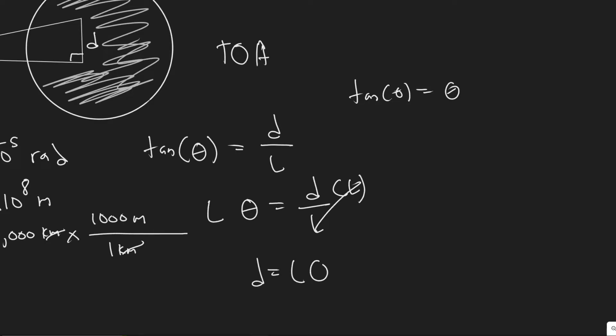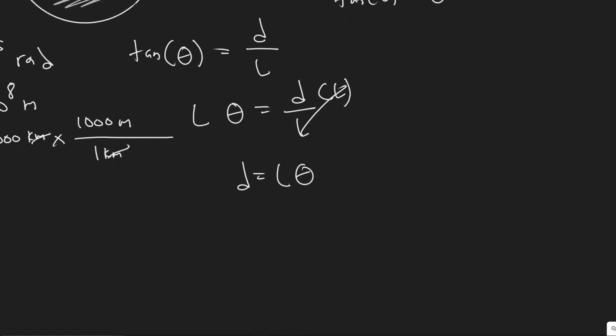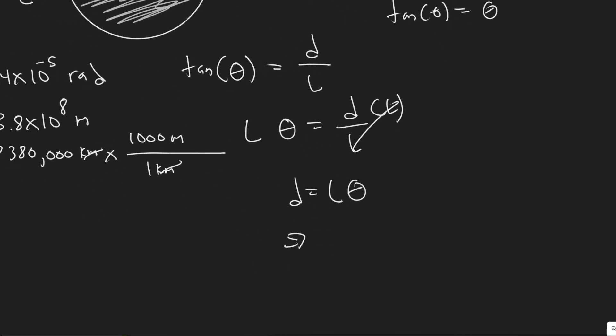And then if we wanted to solve for the diameter, we just multiply both sides by L. So you'll get the diameter equals L times theta. So L is the length, the distance between them, which we said was 3.8 times 10 to the 8 meters.